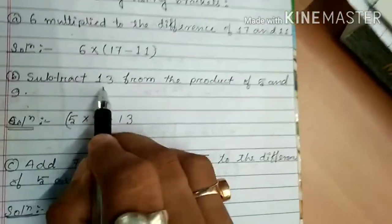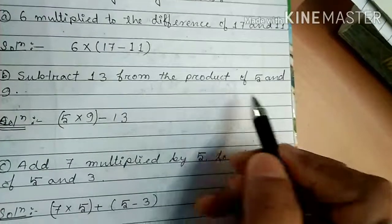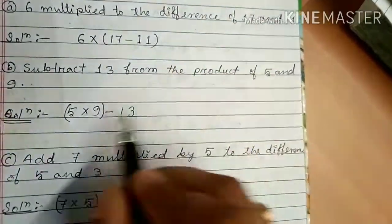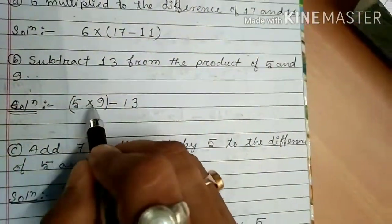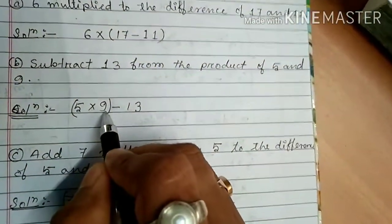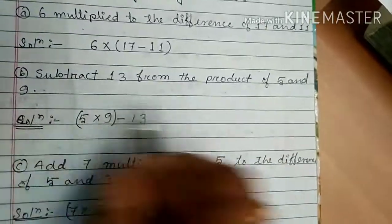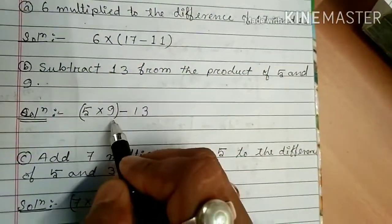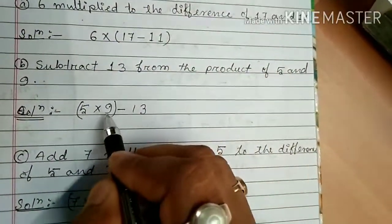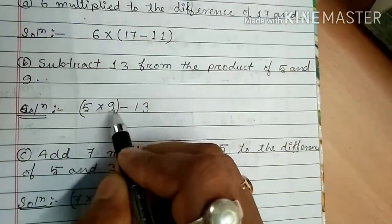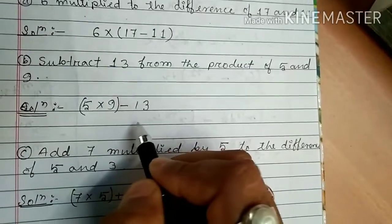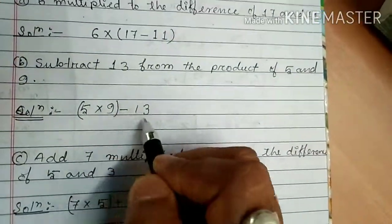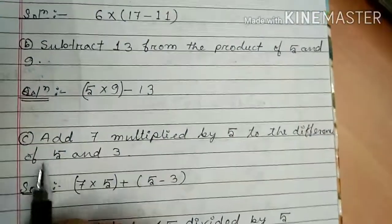Second: 'Subtract 13 from the product of 5 and 9.' First you find the product of 5 and 9, which is 5 into 9. And you have to subtract 13 from this product. That is 5 into 9 minus 13, like that.